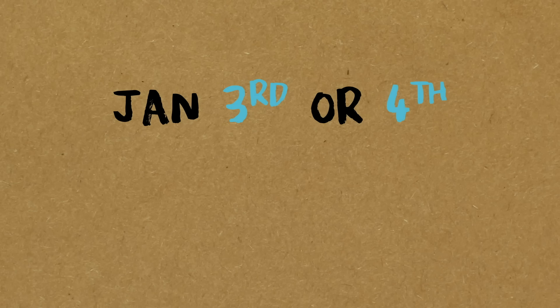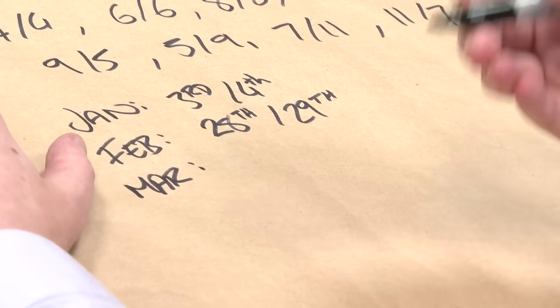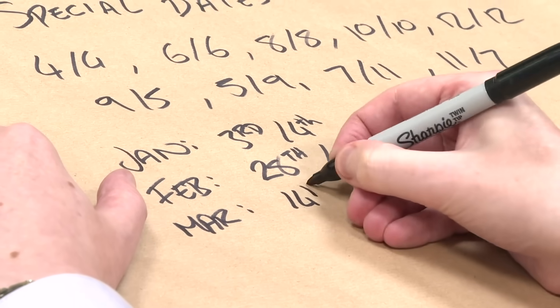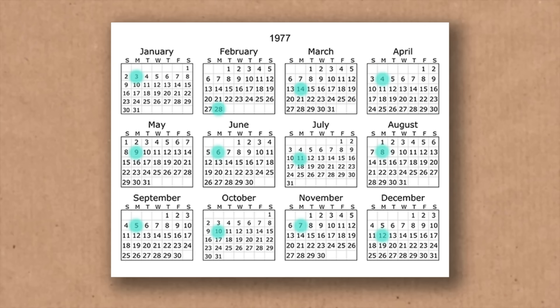I haven't talked about January, February, and March — slightly trickier because of the leap year problem. For January, the special date is the 3rd, or the 4th on a leap year — so it's the 3rd for 3 years, then the 4th on the 4th year. For February, it's the last day of February: the 28th normally, or 29th on a leap year. For March, the special date is the 14th of March — or, as mathematicians like to call it, Pi Day. Pi Day is Doomsday.